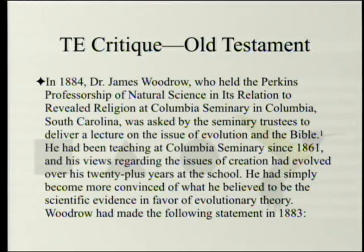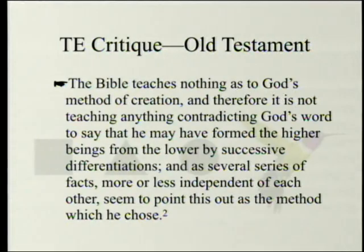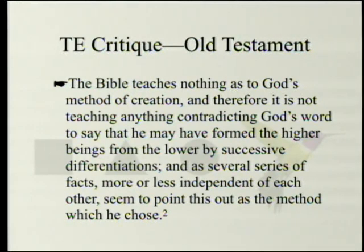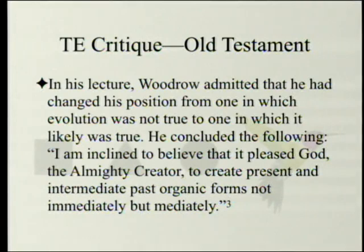Woodrow had made the following statement in 1883, the year before the lectures: 'The Bible teaches nothing as to God's method of creation, and therefore it is not teaching anything contradicting God's word to say that he may have formed the higher beings from the lower by successive differentiations, as several series of facts, more or less independent of each other, seem to point this out as the method which he chose.' In his lecture, Woodrow admitted he had changed his position from one in which evolution was not true to one in which it likely was true.